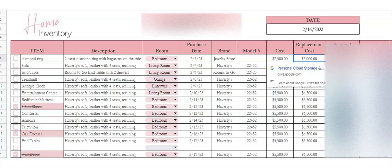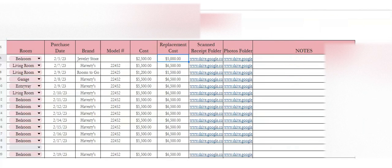Another thing you can do is scan and copy your receipts and create a folder in Google Drive, then have a link to that folder here so you're able to find all of your scanned receipts in one spot. Same thing for photos — if you've taken photos of your item, you can log all of your photos in this folder so you can find it whenever you need it.